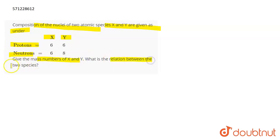So if we talk about the mass number, how do you calculate the mass number of an atom? It is the number of protons plus the number of neutrons.